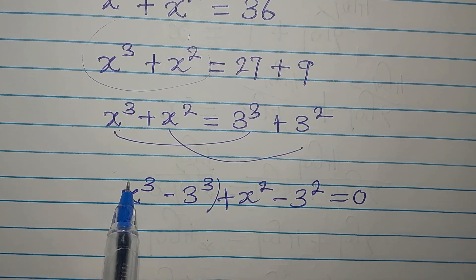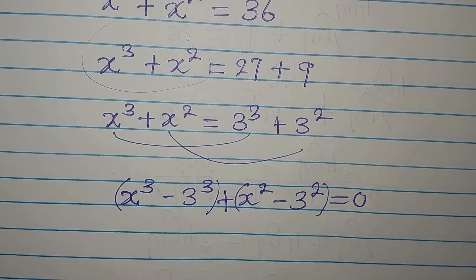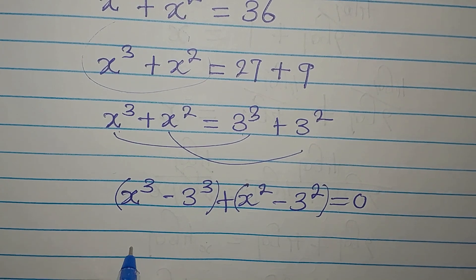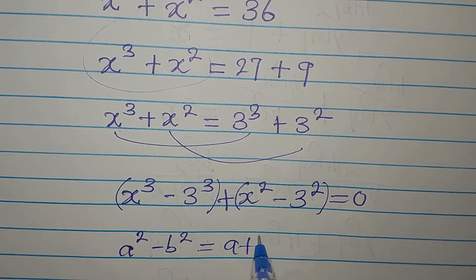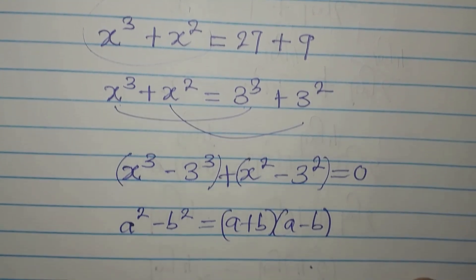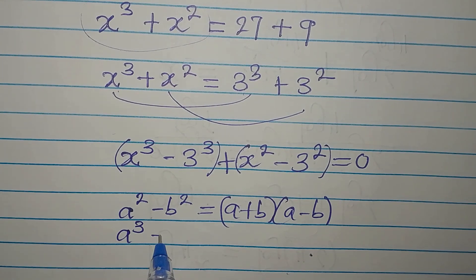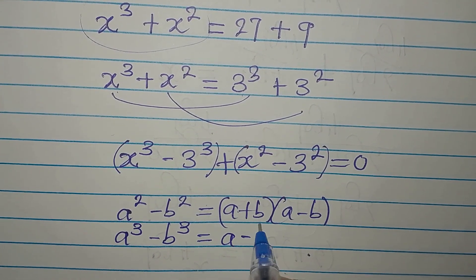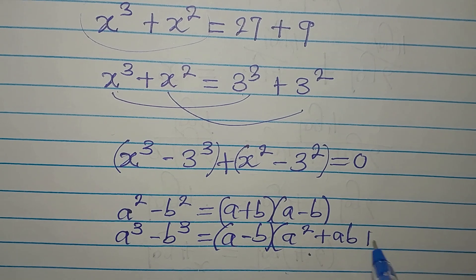We'll deal with each part separately — difference of two cubes and difference of two squares. Just like a² - b² = (a + b)(a - b), the difference of two cubes a³ - b³ gives us (a - b)(a² + ab + b²).